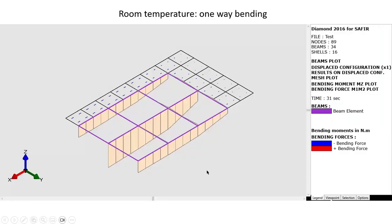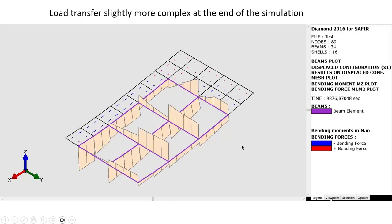This is the bending moment distribution at room temperature, where we observe essentially a one-way bending as we could expect. But during the fire here at the end of the simulation, we have bending moment also in the transverse direction, with some jump, some steps in the moment, which indicates some torsion moment in the longitudinal ribs.